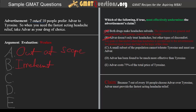In other words, if the higher preference rate does not justify the idea that Advar is faster acting — meaning people do not take it in higher amounts over tyrosine because it's faster acting, but because they're allergic to tyrosine — then that might reasonably undermine the advertisement's claim. Namely, that the reason people take Advar over tyrosine is because it's faster acting. So we can put C off to the side for now, but it's certainly a good candidate.